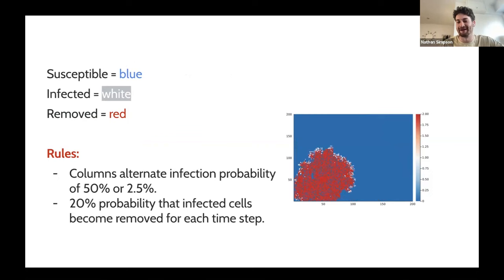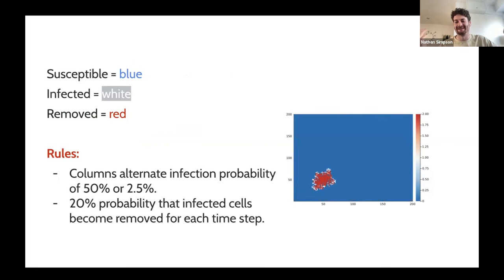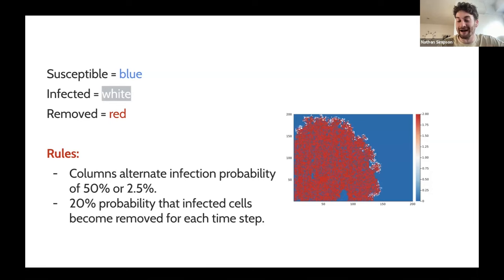The susceptible people are in blue, the infected are in white, and the people who are removed — which is the nice way of saying they might not be on the earth anymore — are in red. There are a couple of rules where at any time step you basically roll a dice with many different faces: on some of the faces it says infected, some of the faces have more morbid things, and some say you're safe. Just a simple set of rules, and it produces something that is actually kind of intelligent.